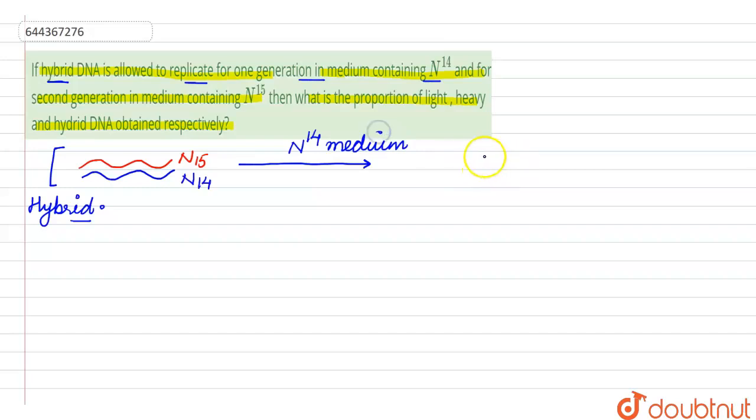Now what will happen, these two parental strands are going to separate since it is semi-conservative in nature and the other strand will be the heavy strand. So both these strands are now going to separate from each other.